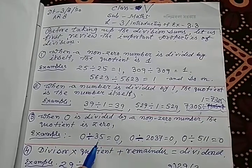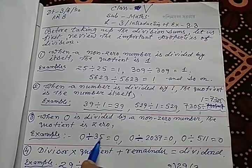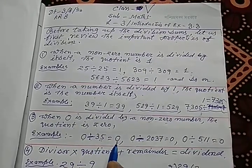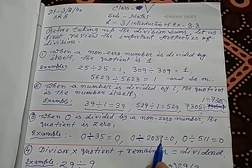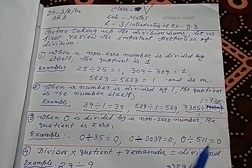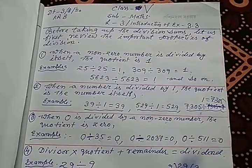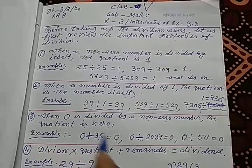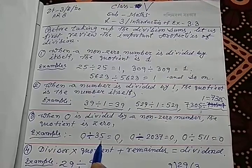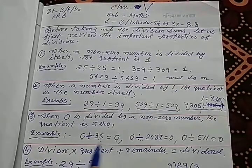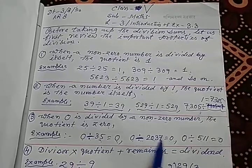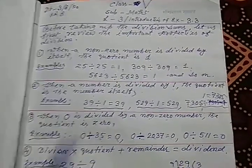So the divisor must be a non-zero number. In all cases: 0 divided by 35 is 0; 0 divided by 2037 is 0; 0 divided by 511 is 0. The divisor is always a non-zero number — 35, 2037, and 511 are all non-zero numbers.